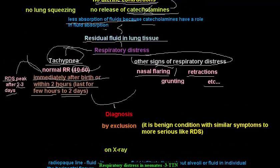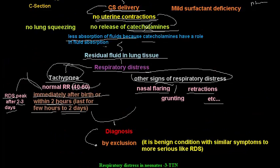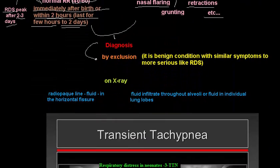How do we diagnose transient tachypnea of the neonate? The diagnosis is by exclusion. You look at a term baby — so you can almost exclude respiratory distress syndrome — and you think about TTN. When does it present? If it presents in less than six hours, think about transient tachypnea of the neonate; if more than six hours, think about pneumonia. When does it resolve? If it resolves at two to three days, then it is transient tachypnea of the neonate. The diagnosis is by exclusion because it is a relatively benign condition with similar symptoms to more serious conditions like respiratory distress syndrome.